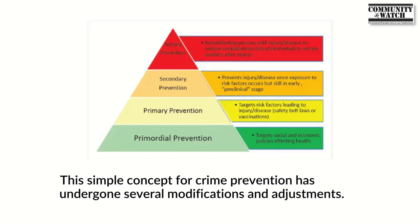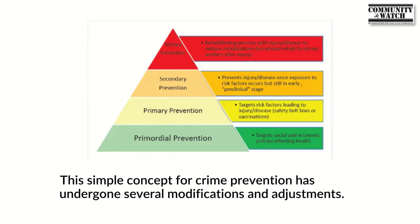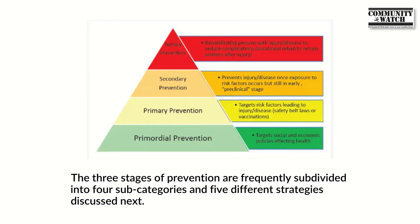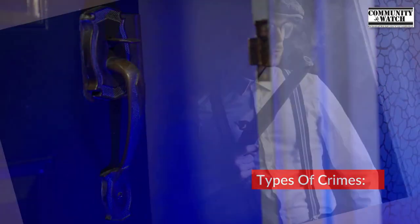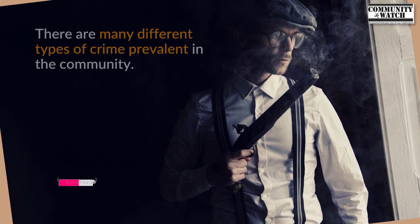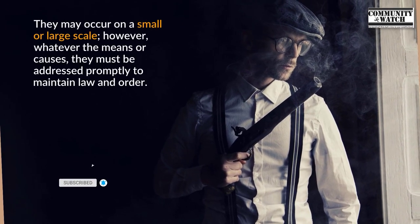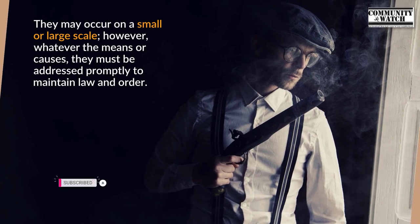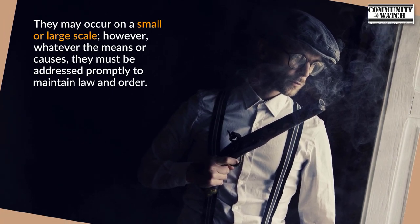This concept of crime prevention has undergone several modifications and adjustments. The three stages of prevention are frequently subdivided into four subcategories and five different strategies. There are also many different types of crime prevalent in the community, which may occur on a small or large scale and must be addressed promptly to maintain law and order.